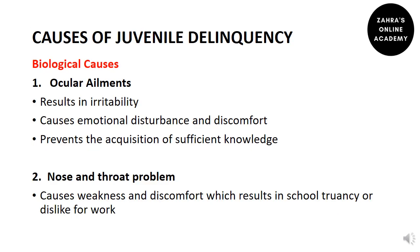Now we will discuss the causes of juvenile delinquency. The first biological cause is ocular ailment — a condition related to the eyes. Ocular ailment leads to irritability, causing emotional disturbance and discomfort. As a result, a juvenile with an ocular ailment would not be able to acquire sufficient knowledge useful for his future, and may turn toward delinquent behavior.